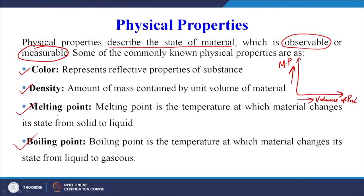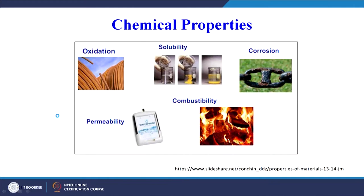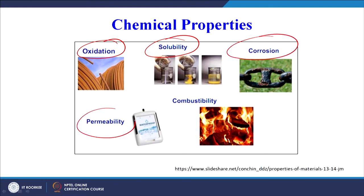So when we are talking about the properties of materials, we have four broad categories; the first one is physical properties. Then we go to the chemical properties — on your screen you can see properties such as oxidation, solubility, corrosion, permeability, and combustibility. These are representative chemical properties; there can be an extended list of chemical properties which must be taken into account before finalizing a material for a particular product.